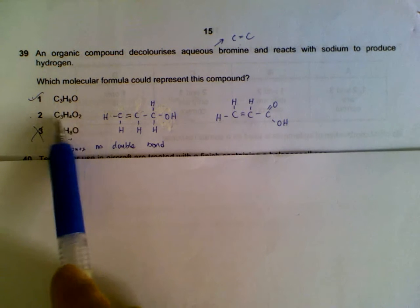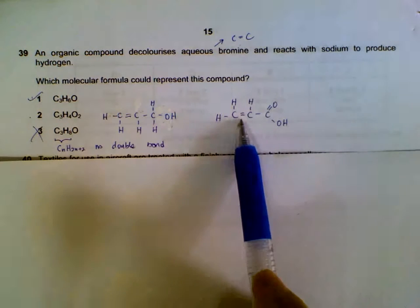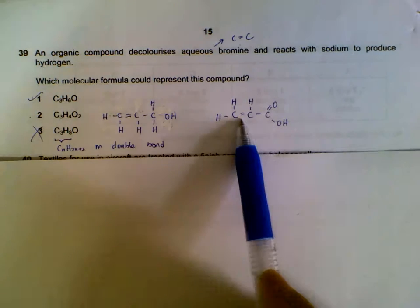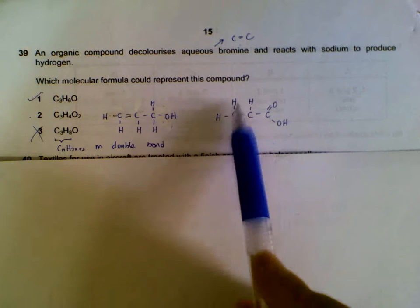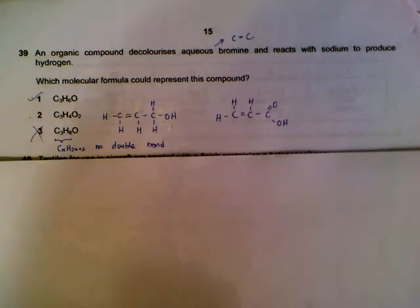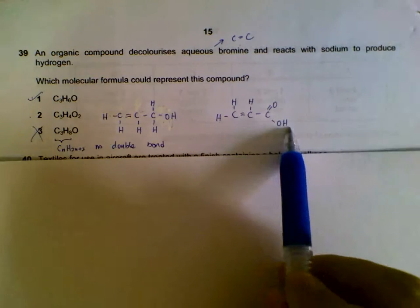We put a double bond to try out. And then it seems that the two oxygen will form the acid group. So we have C3H4O2. This one will decolorize bromine, and this one will react with your sodium.